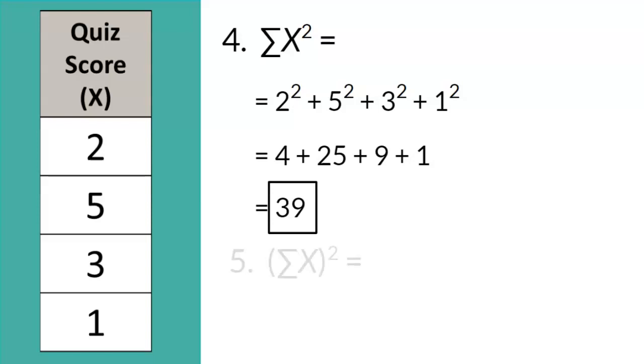But wait! Doesn't question 5 ask us to do the same thing as question 4? This is a common mistake that students make. Recall that the order of operations reminds us to take care of the parentheses first. So, what is in the parentheses? In this case, it's the sum of X, which we already calculated in question 1. The sum of X is 11. So now we just need to square 11 to get the final answer of 121. Can you see how different these answers are?